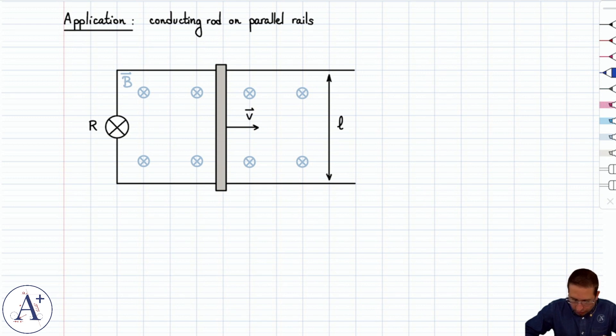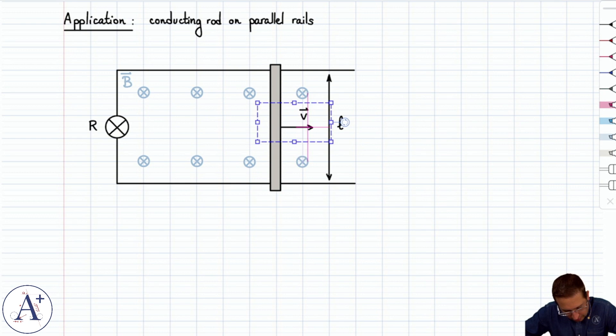So first things first, do we have magnetic flux? Yes, we do. We have magnetic flux through this area here, and this area increases as the rod moves to the right, which means that the magnetic flux increases. Because as the rod moves to the right, more magnetic field lines go through this surface now, meaning that phi-b must increase.